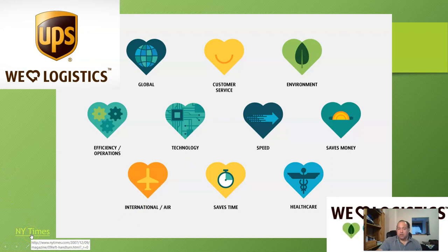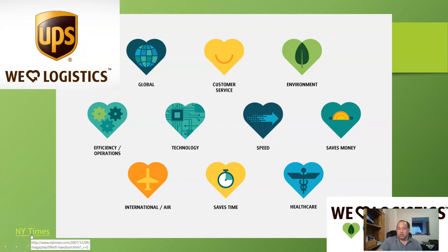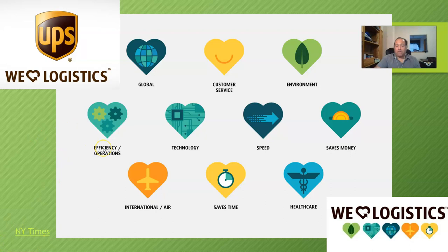There's an article linked in the slides — UPS is huge on their use of GIS systems. The article talks about how, through GIS analysis in large metropolitan cities, UPS realized the time spent with drivers making left-hand turns is too long, and that they can save millions of dollars if their drivers only make right-hand turns. GIS has aided them in saving time and making their logistical pattern much more efficient.